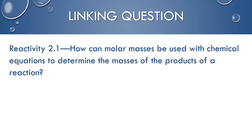This also links to reactivity 2.1, which is on stoichiometry — how we use molar masses with chemical equations to determine the masses of products of a reaction. In stoichiometry you need a balanced chemical equation and use those coefficients to convert between reactants or products of different substances. That's why you must have a balanced chemical equation. Thank you.